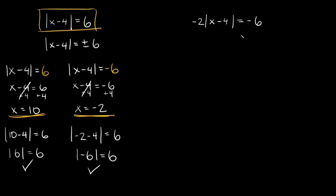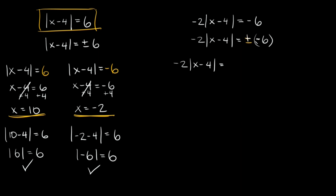Now let's do one that's a little bit harder. We can rewrite this as negative 2 times the absolute value of x minus 4 is equal to positive or negative negative 6. You just have to keep your signs consistent. Splitting into two equations: the first gives a positive times negative 6, which is negative 6; the second gives a negative times negative 6, which is positive 6.